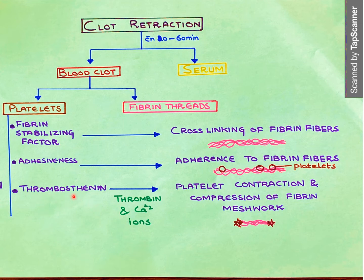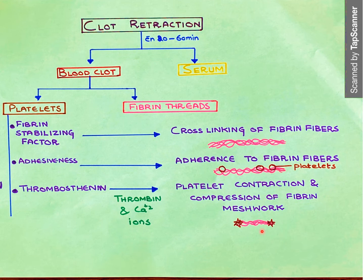The platelets are activated, become adhesive, and adhere to the fibrin fibers. The contraction is because of thrombosthenin — the contractile proteins present in the platelets. Actin and myosin are also present in the platelets, and under the influence of thrombin and calcium ions, the contractile proteins cause platelet contraction. When the platelets contract, compression of the fibrin meshwork occurs, causing serum to ooze out and a smaller clot to form from the bigger fibrin meshwork.